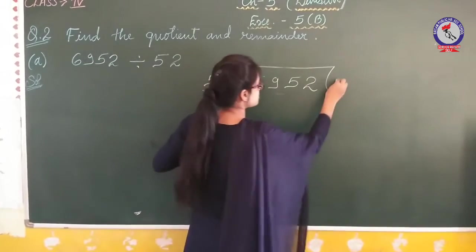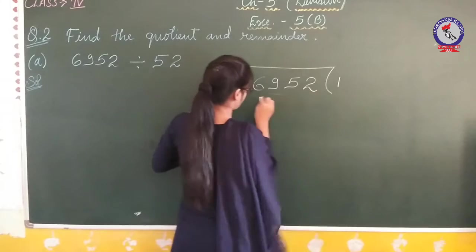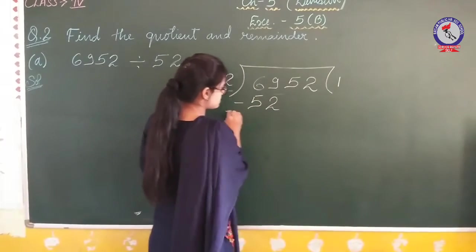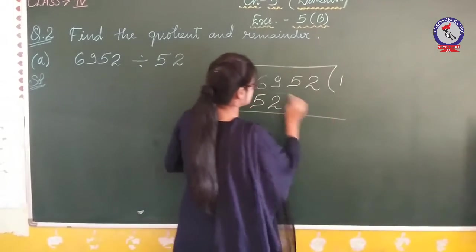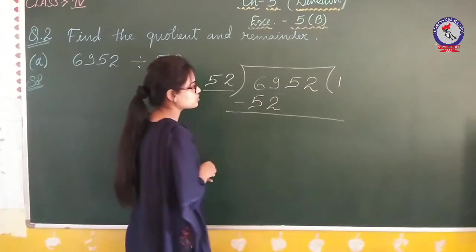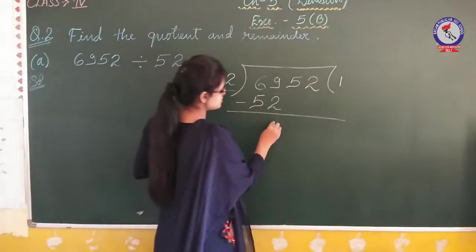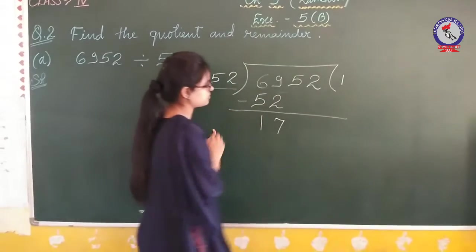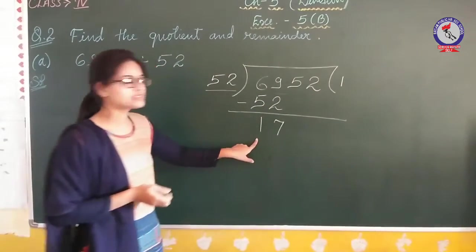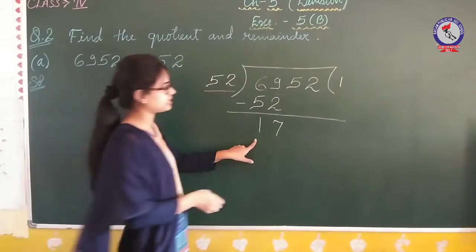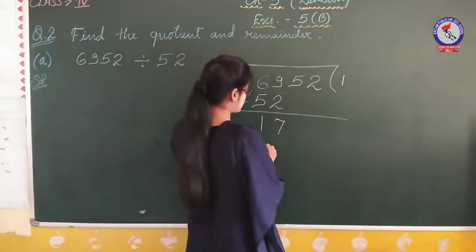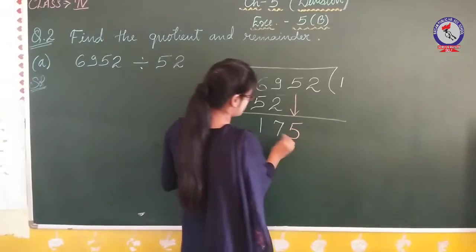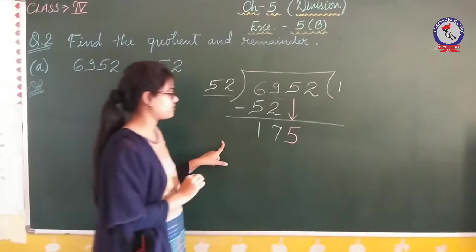52 goes into 69 once, giving us 50. Now we subtract: 9 minus 2 is 7, and 6 minus 5 is 1. We bring down the next digit to get 175.